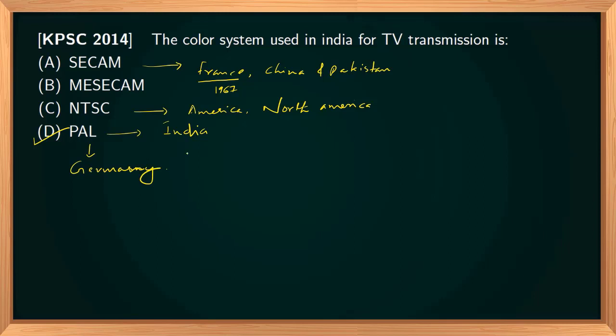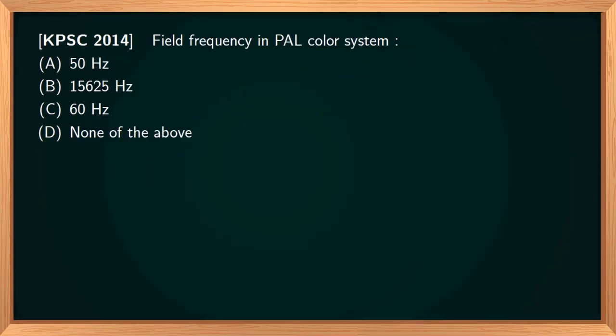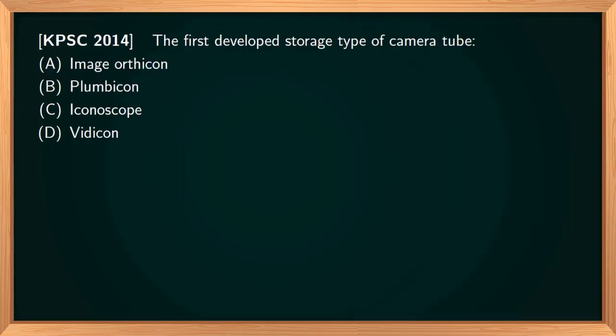The field frequency in the PAL color system is 50 Hz. The first developed storage-type camera tube is the iconoscope, which was then replaced by the image orthicon because of its high light sensitivity, stability, and high quality picture capabilities.